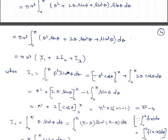We write this as πa³(I₁ + 2I₂ + I₃), where I₁ = ∫[0 to π] θ²sin θ dθ. Integrating by parts: I₁ = [−θ²cos θ]₀^π + ∫[0 to π] 2θ cos θ dθ. Putting limits gives π², and integrating the second term by parts: [2θ sin θ]₀^π − 2∫[0 to π] sin θ dθ. Since integration of sin θ is −cos θ, putting limits 0 to π gives I₁ = π² − 4.